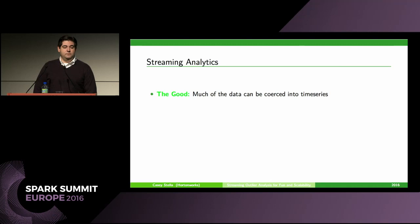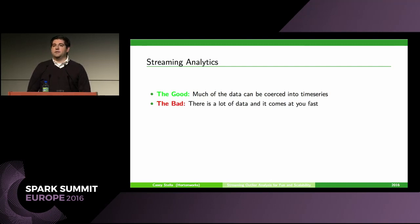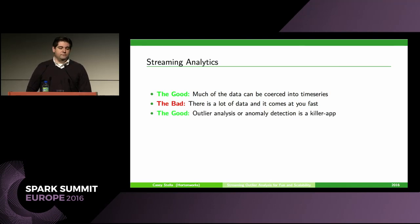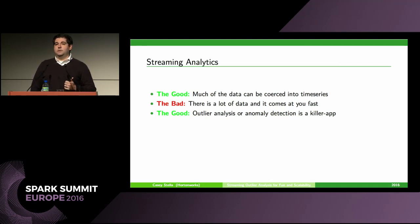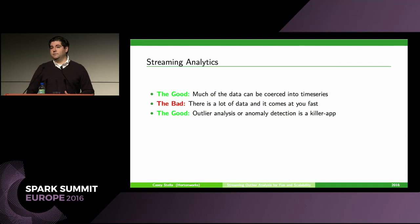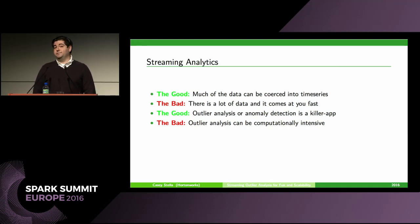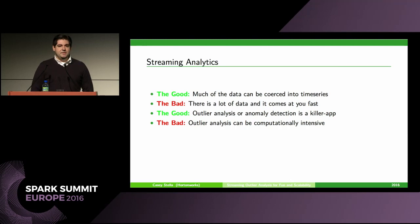Much of the data can be coerced into a time series, but there's a lot of data coming at you fast. The variety issue hits you more than you would expect — lots of different time series that have different meanings. Outlier analysis and anomaly detection, I believe, is a killer app. The fact that we don't have a good outlier analysis package in Spark yet is testament to the fact that we are early on this path.